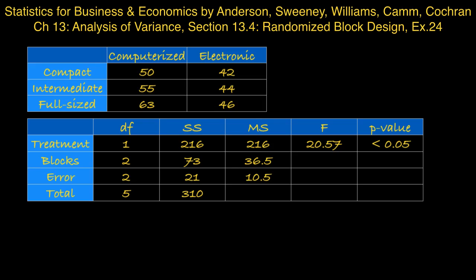And then to calculate the error degrees of freedom, we take the total degrees of freedom, 5, and subtract the treatment degrees of freedom, 1, and the blocks degrees of freedom, 2, and we obtain 2 for the error degrees of freedom.